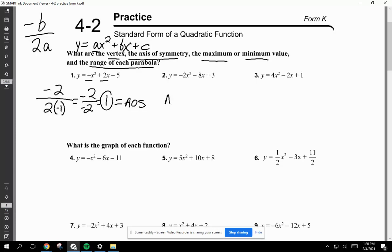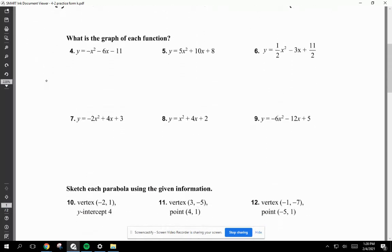So do the AOS for this one too. Same formula I just did. Negative B over 2A. Solve that. AOS equals negative B over 2A. 4, 5, and 6. What is the graph of each function?